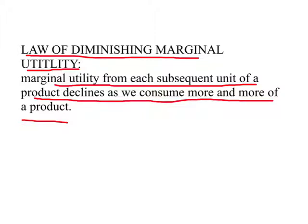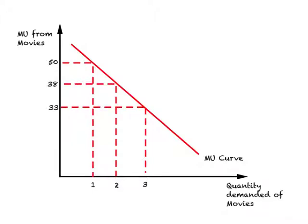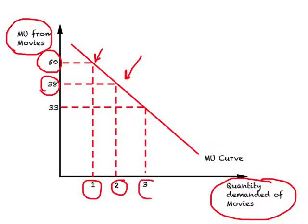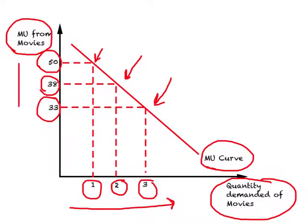The law of diminishing marginal utility states that marginal utility from each subsequent unit of a product declines as we consume more and more of it. We observe this with both movies and sodas. In the diagram, quantity of movies is on the horizontal axis and marginal utility on the vertical axis. Plotting each point — 50, 38, 33, and so on — and joining them gives a downward-sloping marginal utility curve, indicating that marginal utility continuously declines as more movies are watched. This completes our discussion.